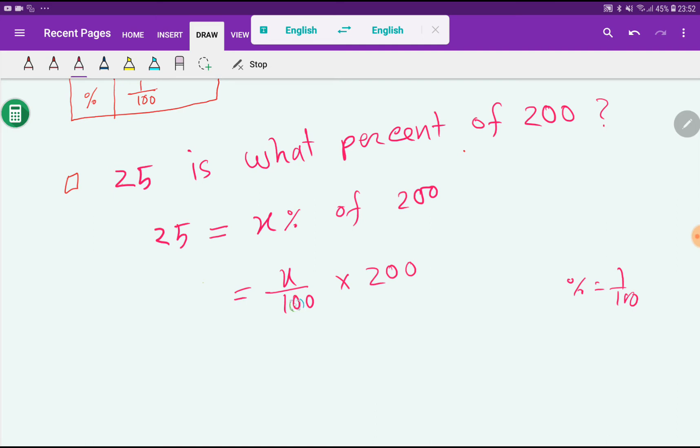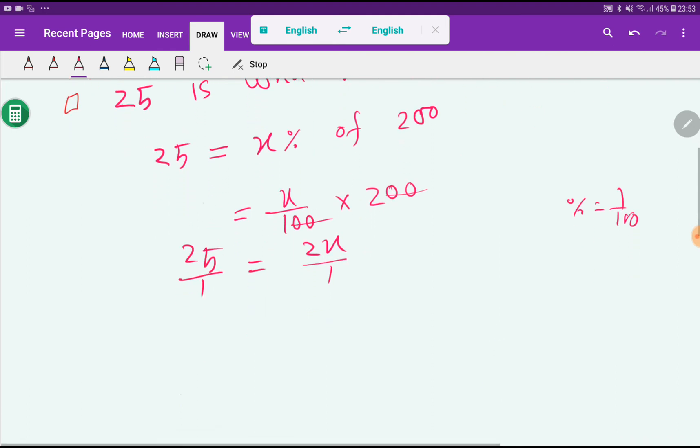We are getting this. Zero and zero will cancel each other, so we are getting 2x divided by 1 and 25 by 1. We can write 25 like this, so basically we are getting here...